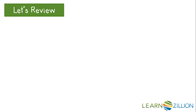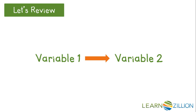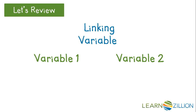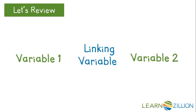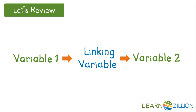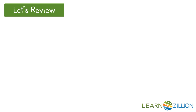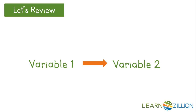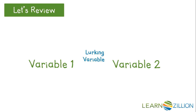Let's review. You have learned that correlation between two variables can sometimes be the result of a linking or lurking variable. A linking variable acts between the two variables and links the action of variable 1 to the action of variable 2. A lurking variable acts in the background, causing the changes in both variable 1 and variable 2.